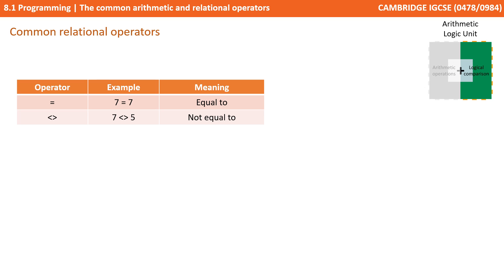Next, we have not equals to. And that's represented by open and close angular brackets. So 7 is not equal to 5.